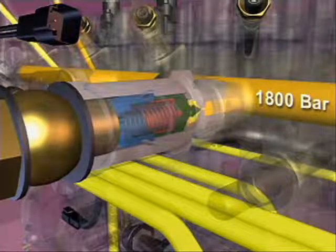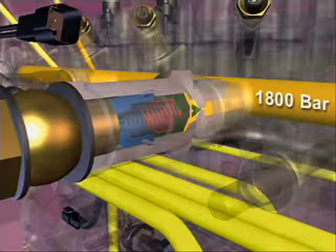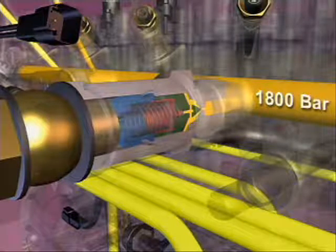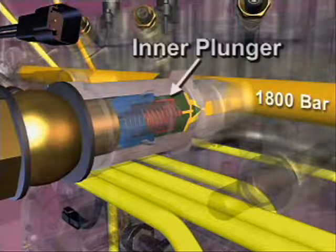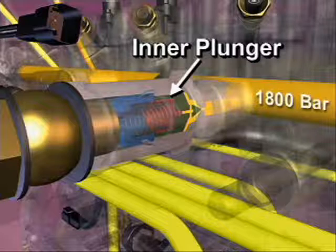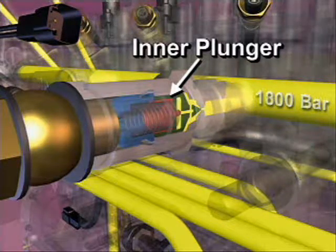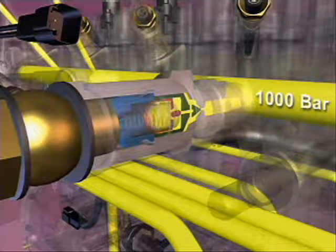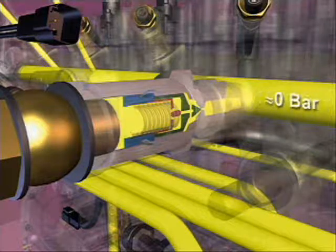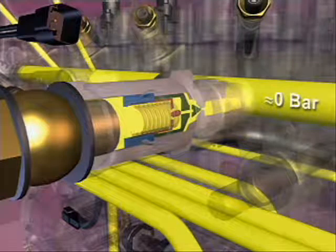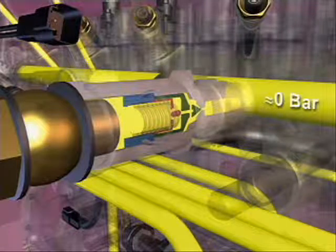Once opened, the outer plunger moves to its stop and a larger area is exposed to the high-pressure fuel. This causes the inner plunger to open and rail pressure drops to 1000 bar. After the fuel rail pressure relief valve opens, the rail pressure must approach zero to reseat and close the valve.